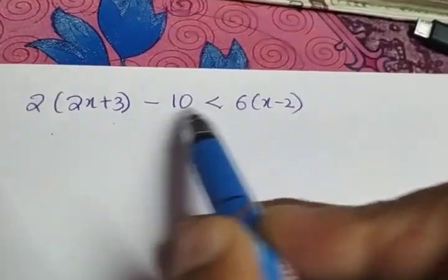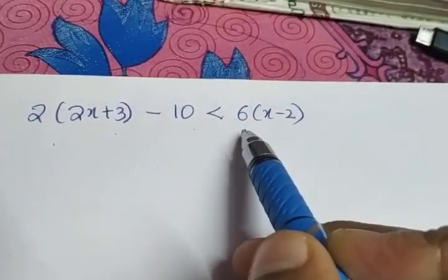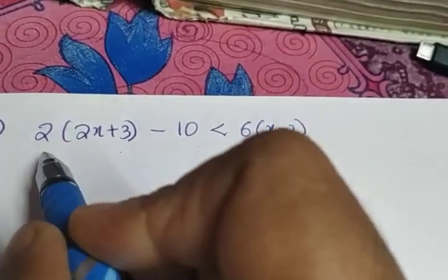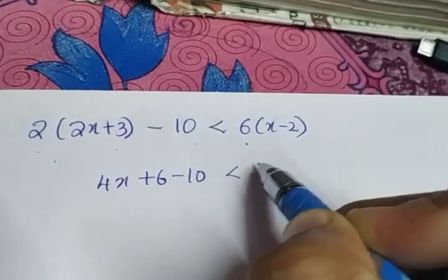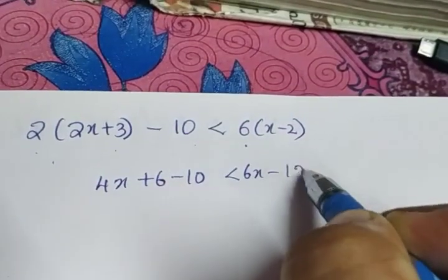Next one: 2(2x + 3) - 10 < 6(x - 2). So just to open the brackets, what we will get is 4x + 6 - 10 < 6x - 12. Collect x terms to one side.